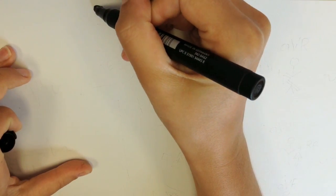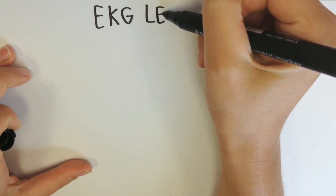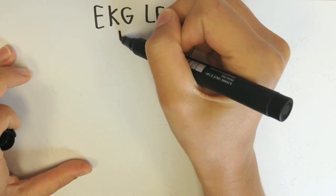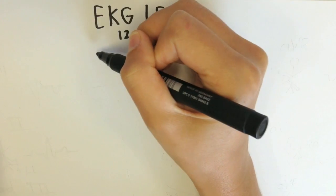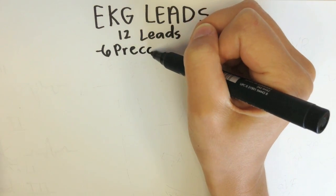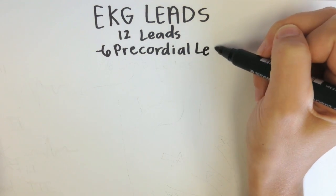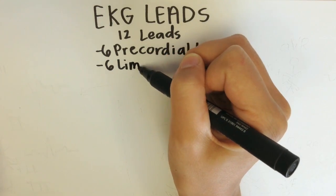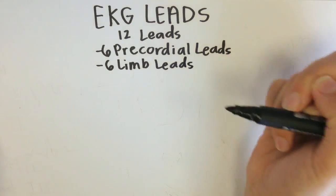Now we are going to talk about the EKG leads. In total, we have 12 EKG leads. These are divided into 6 precordial leads, which view the heart at a horizontal plane — we are not going to talk about those today to save some time. And then we have 6 limb leads, which view the heart at a frontal plane, and these are the ones we will be discussing today.